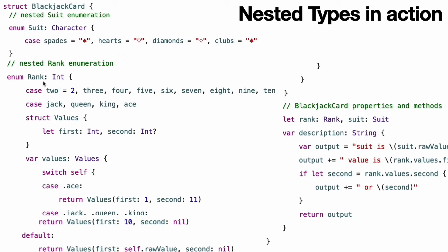In Blackjack, the Ace cards have a value of either 1 or 11. This feature is represented by a structure called Values, which is nested within the Rank enumeration.